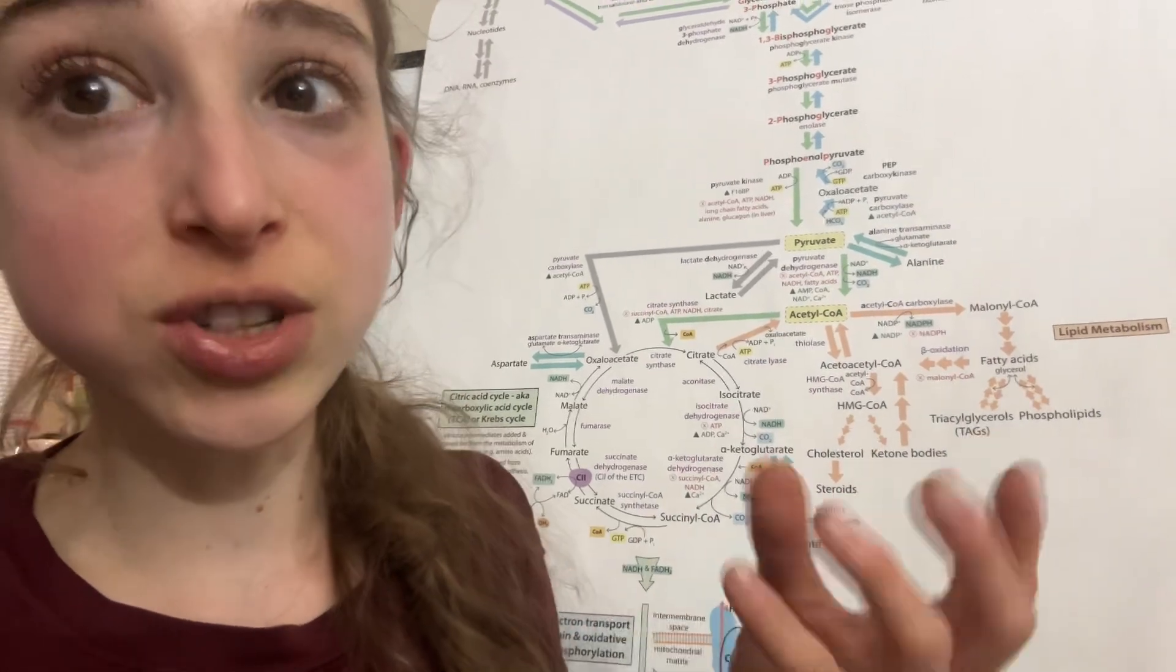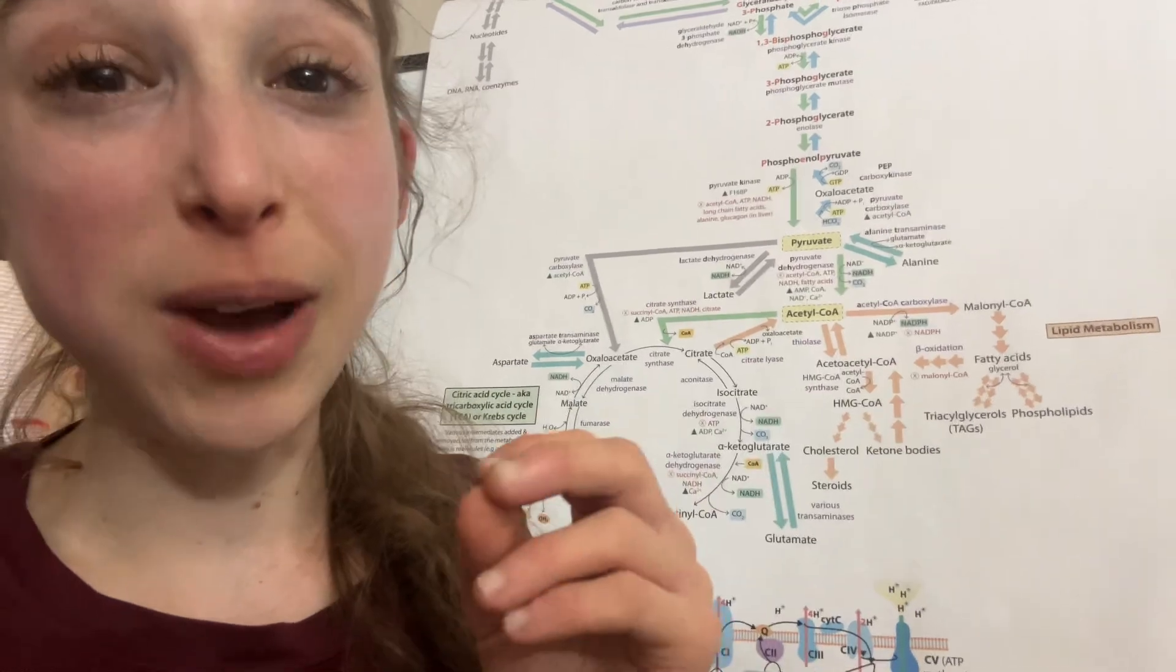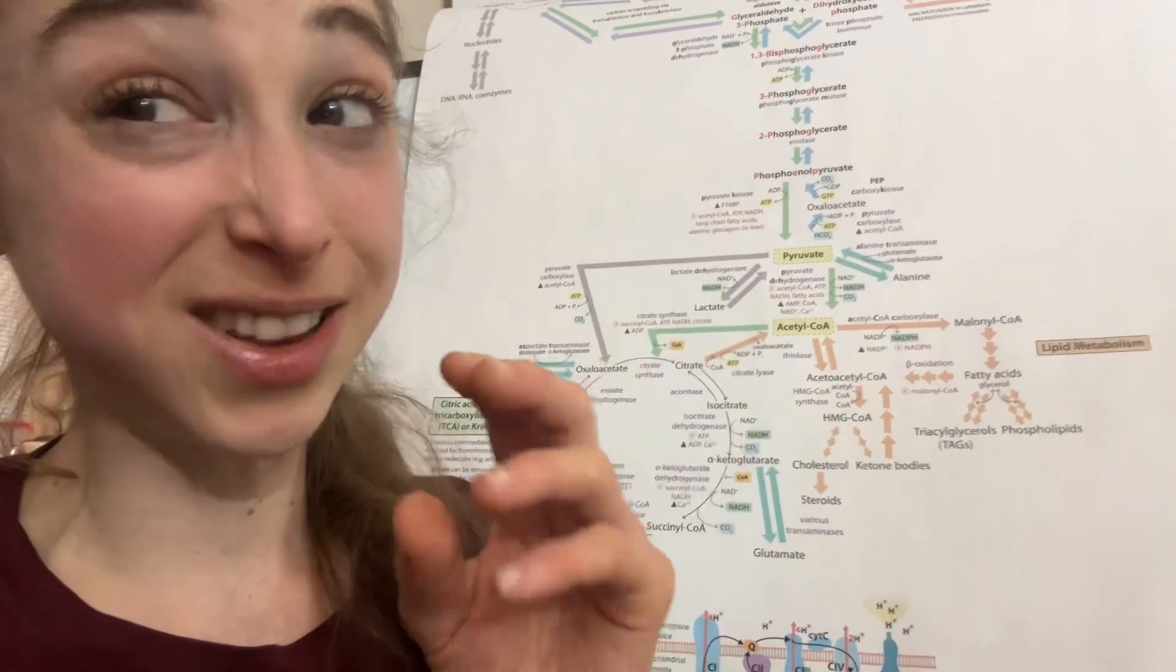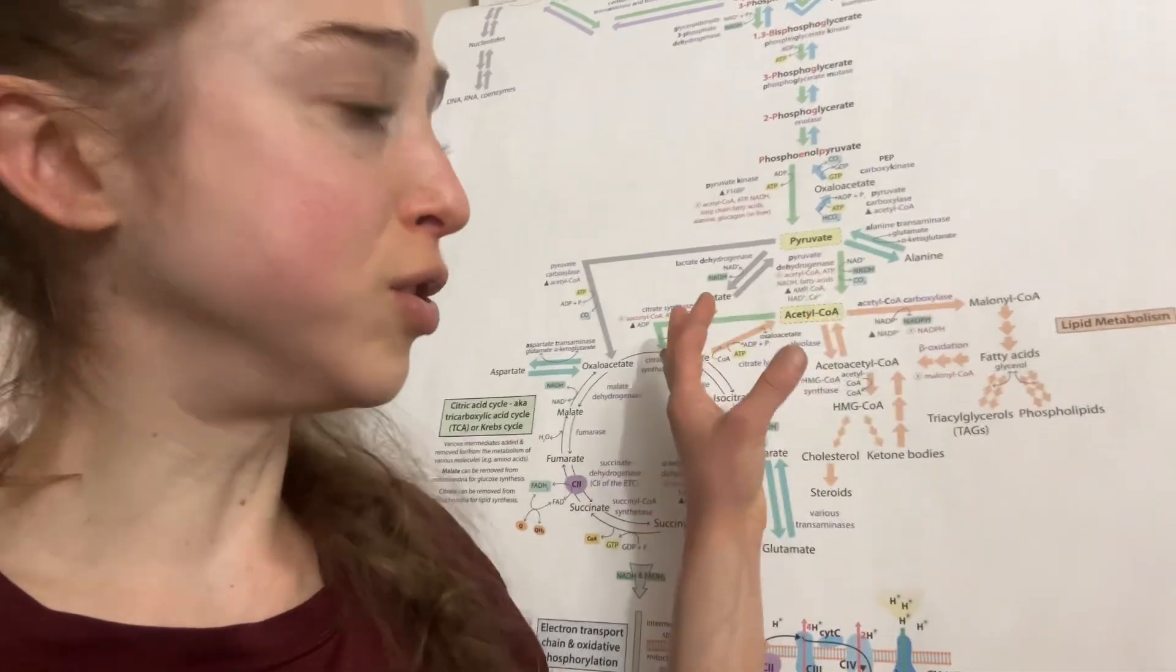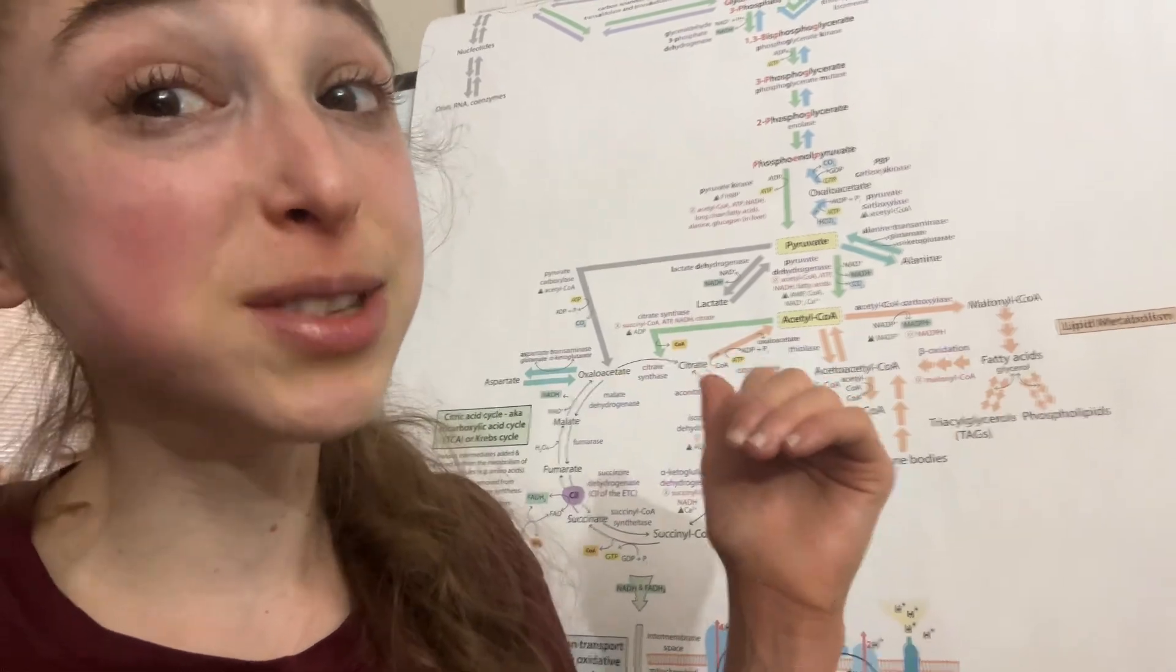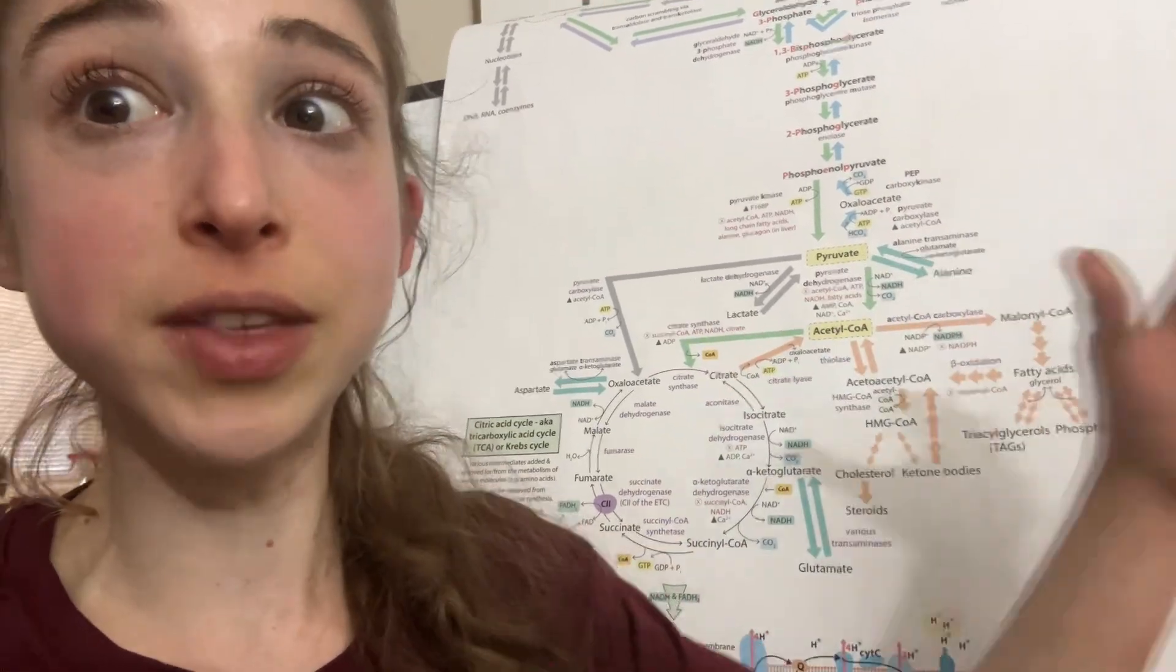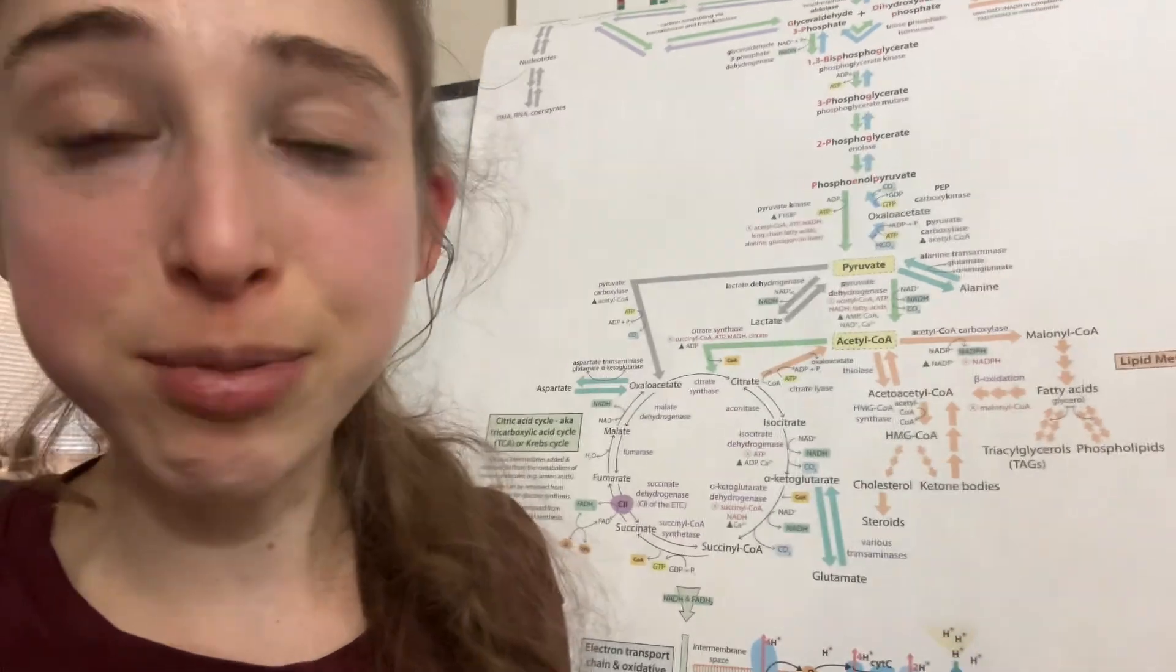You can also, of course, just write things out on paper, but I find it helpful to have a digital version because one of the nice things about doing it in draw.io or Illustrator or Inkscape is you're going to find when it comes to metabolism that you keep having to move things apart to add more and more arrows and more and more different side branches.